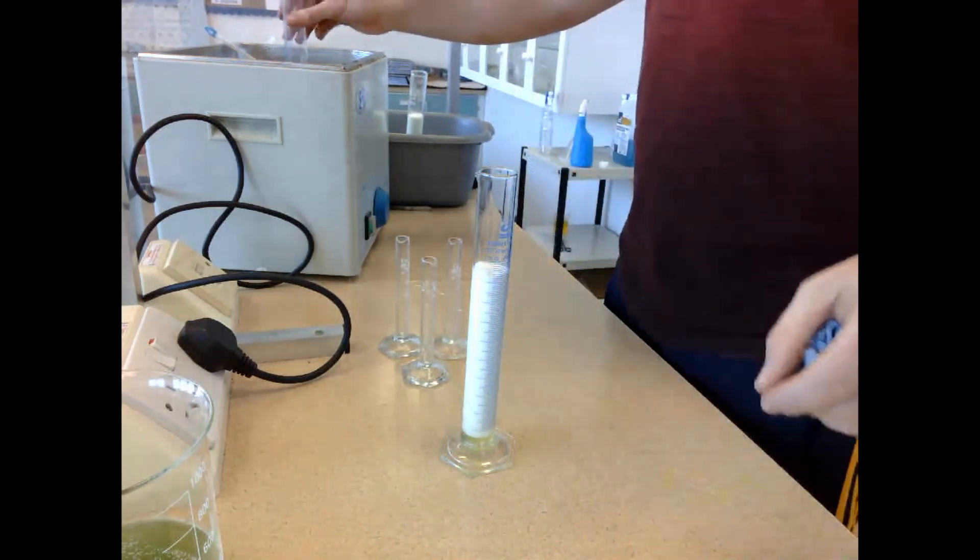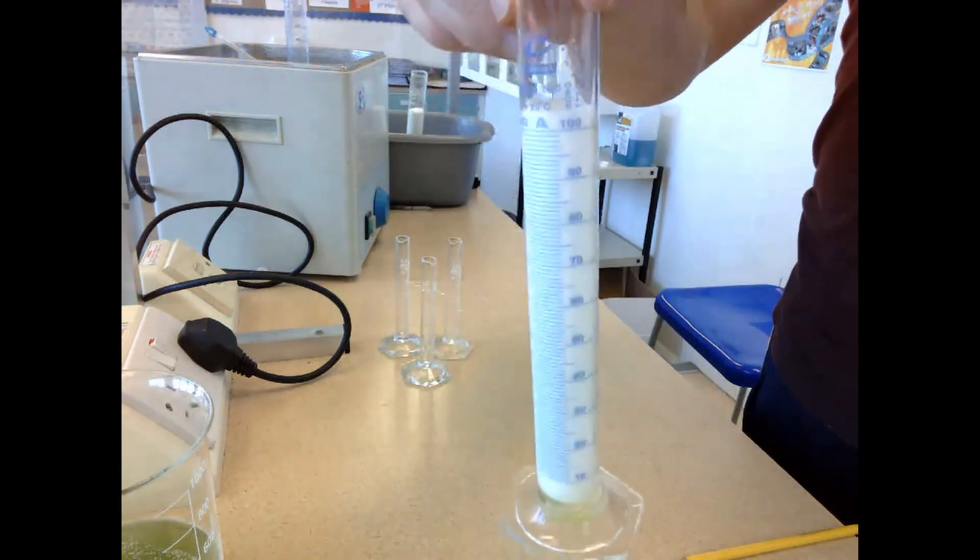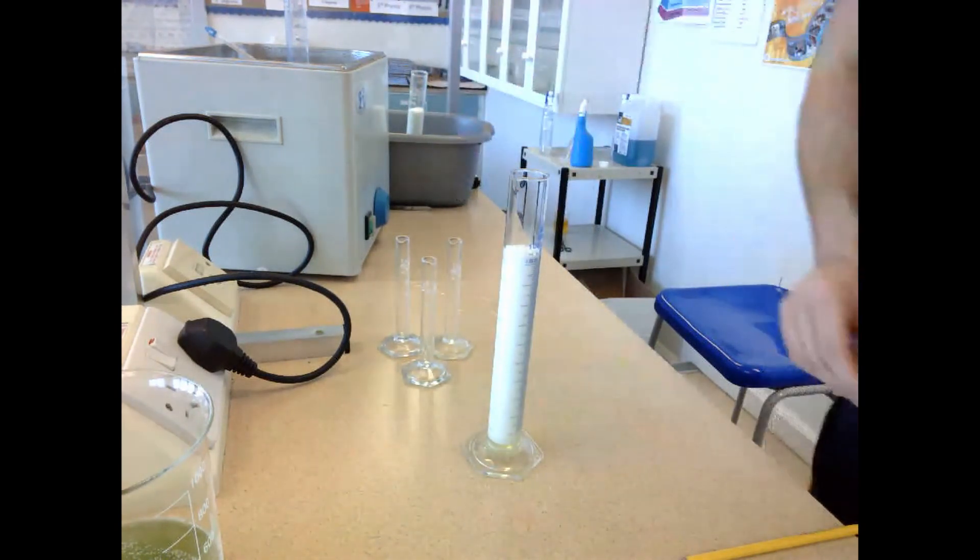The room temperature cylinder clearly worked best. Therefore, we can conclude that the optimum temperature for catalase enzyme activity is approximately 25-30 degrees Celsius.